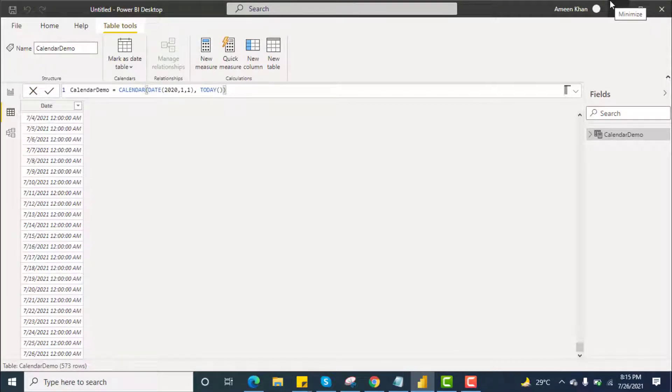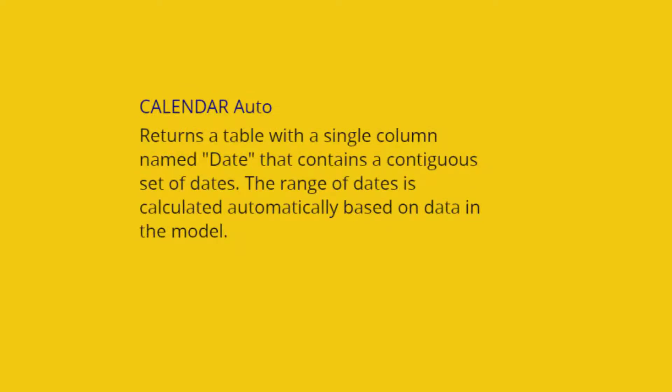Now let's move to the CALENDARAUTO function. CALENDARAUTO returns a table with a single column named 'date' that contains a contiguous set of days. The range of dates is calculated automatically based on the data in the model. This is the key difference from the CALENDAR function — CALENDARAUTO works with the data model currently present in Power BI Desktop.